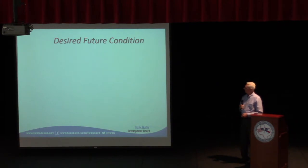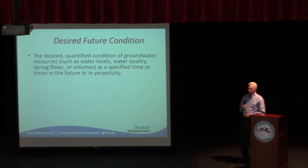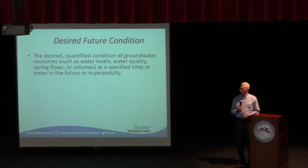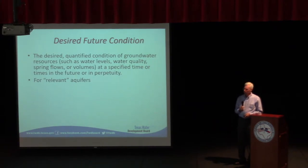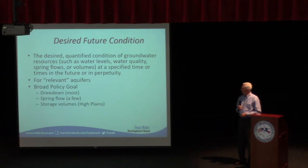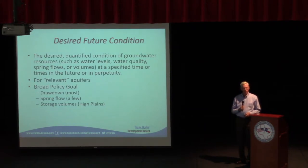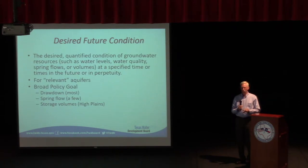So what are desired future conditions? That's the textbook definition, but it basically answers the question: what do you want your aquifer to look like in the future? That's a policy decision — it's a decision involving a lot of different things. It's for the relevant aquifers — major and minor aquifers. It's a broad policy goal. Typically, and certainly in this area, the desired future condition is usually expressed in water levels or drawdowns — the drawdown being the change in water level elevation from some sort of baseline condition, usually the most recent water level data.